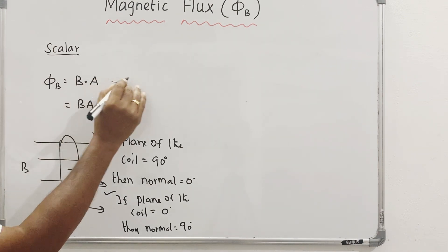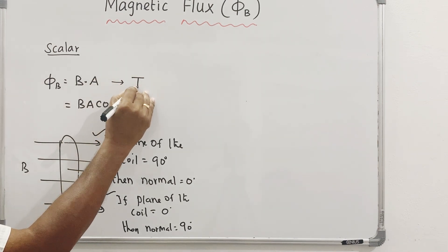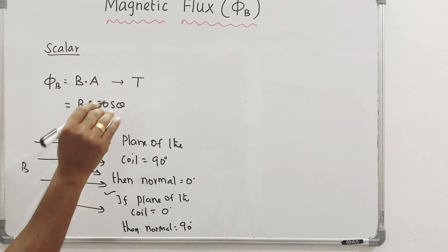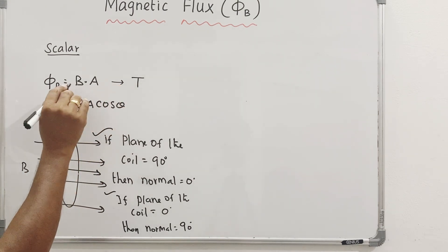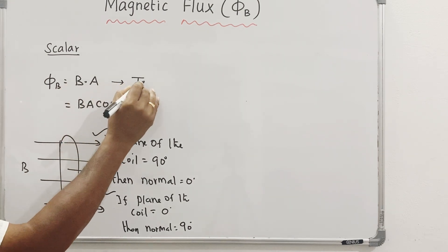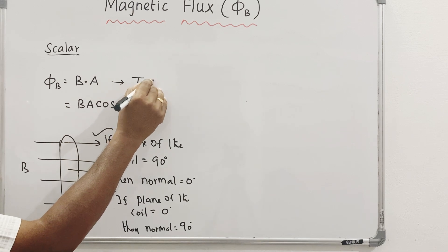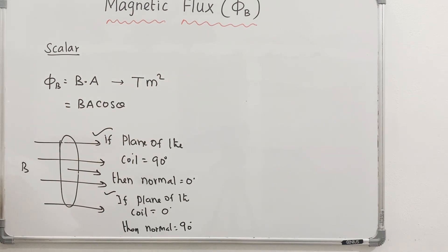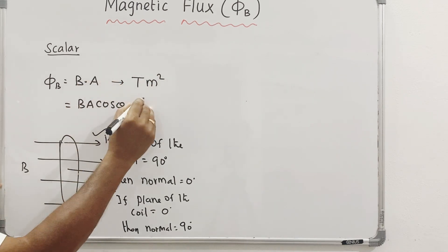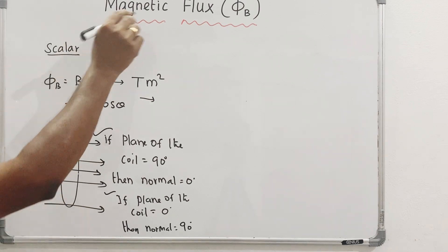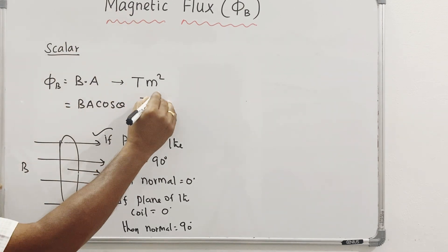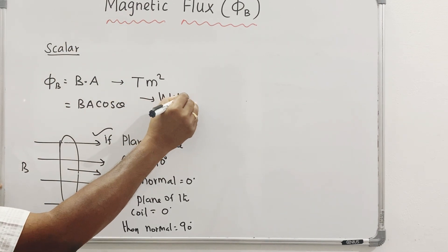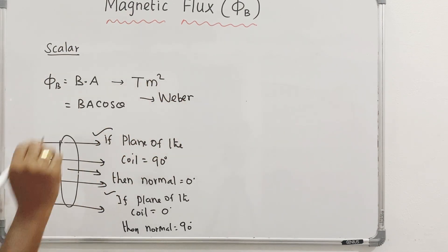Magnetic induction B is measured in Tesla. The area A is in meter square. So the unit of magnetic flux is Tesla times meter square, which equals Weber.